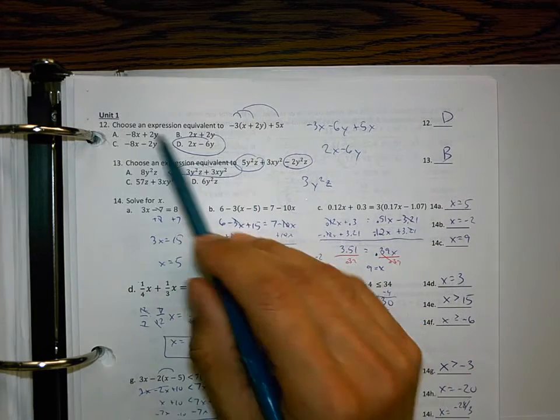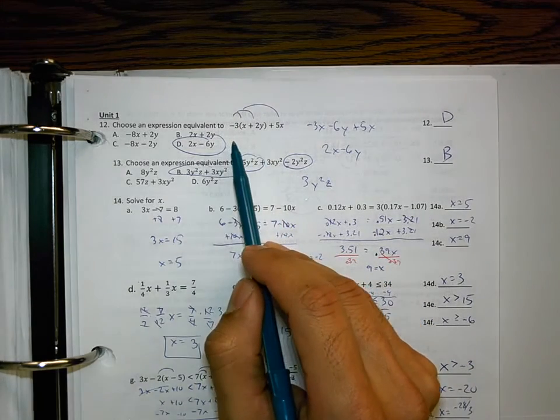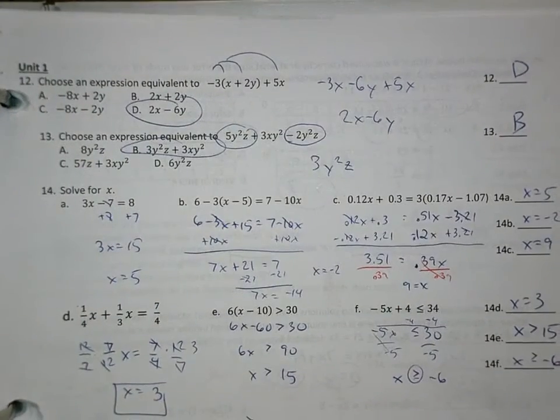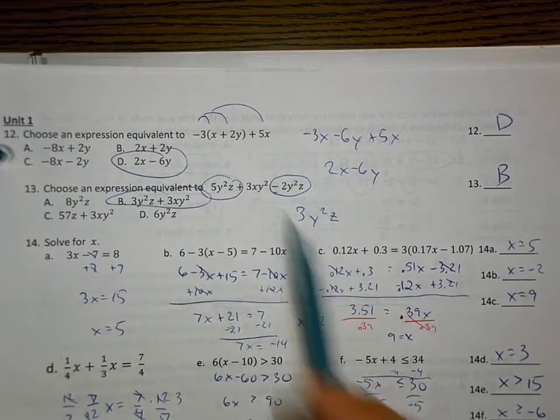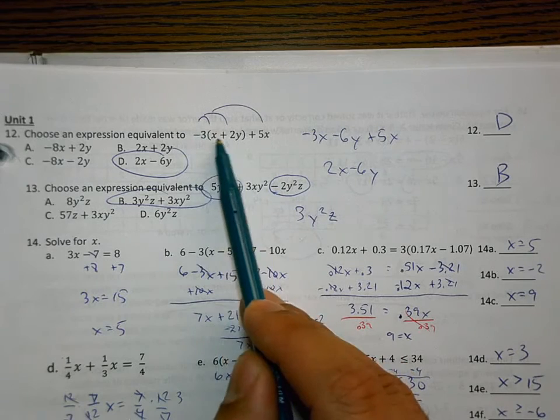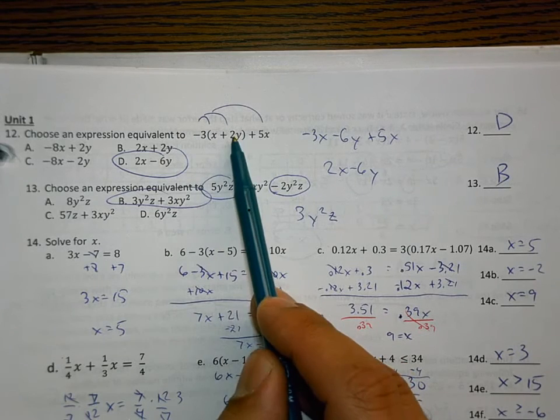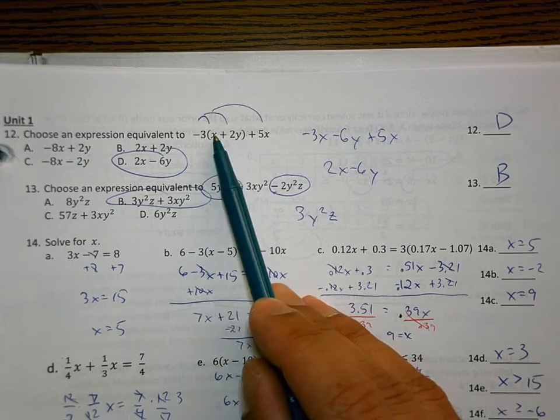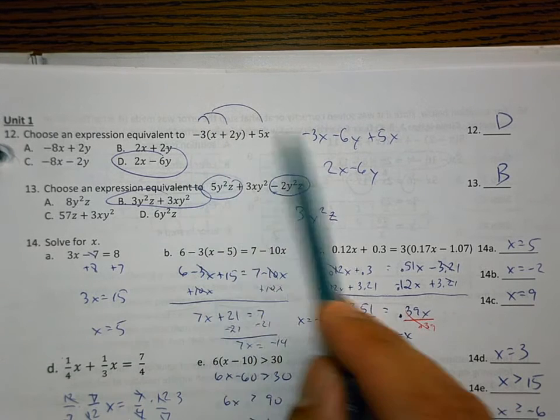If you're doing a problem like number 12, I'll zoom in on it. And you have to distribute this negative 3 to the x and to the 2y. You get negative 3x minus 6y because that times that is that and that times that is that.